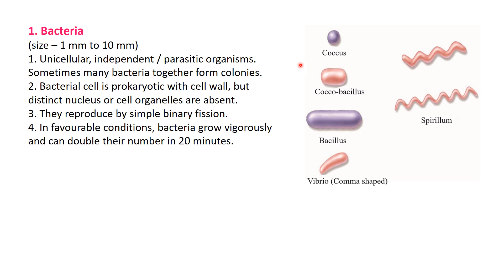Now we will see the shapes of bacteria. Coccus - it is a spherical or round shape. Coccobacillus - it is slightly round as well as cylindrical in shape. Bacillus - it is rod shape. Vibrio - it is comma shaped, just looking like a comma. And Spirillum - its shape is spiral. So these are the different shapes of bacteria: coccus, coccobacillus, bacillus, vibrio, and spirillum.